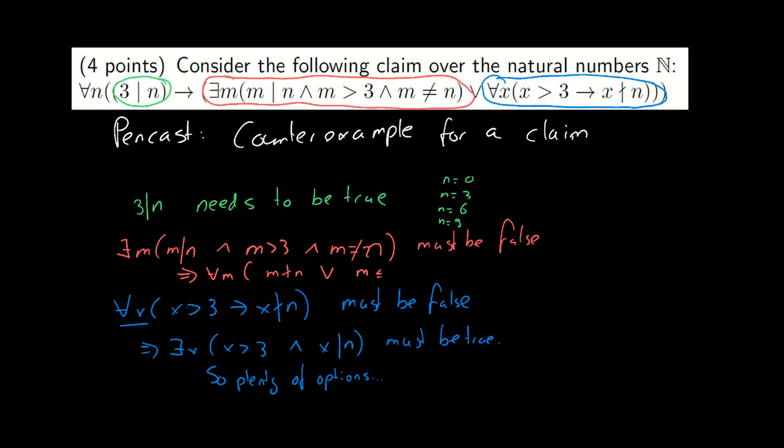Now what about this there exists an m thing? If that needs to be false, then it must mean that all m must have certain properties. In this case, all m either shouldn't be a divisor, they should be smaller than or equal to 3, or they should be equal to n. In other words, if we want to read this as an implication, it says that all divisors of n must either be smaller than 3 or equal to n.